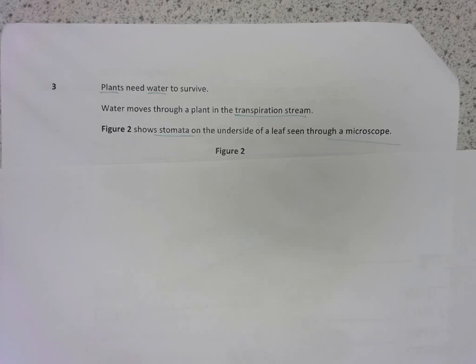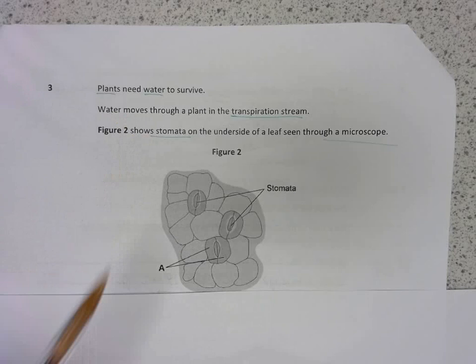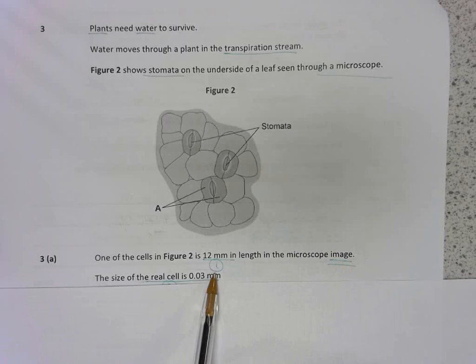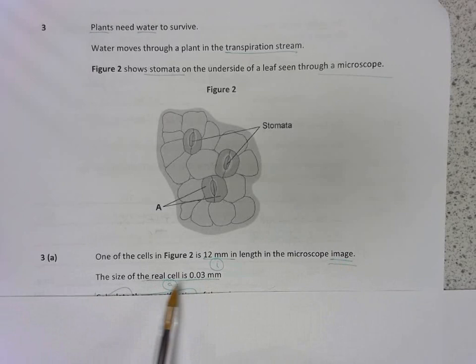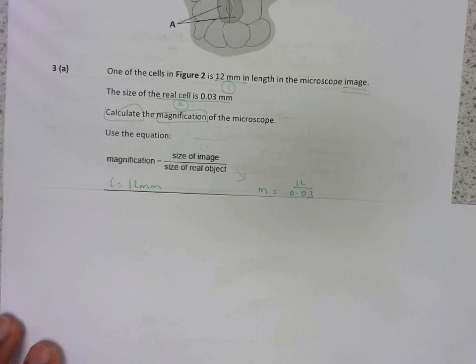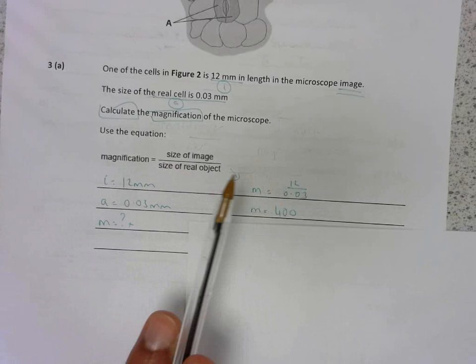Question 3. Plants need water to survive. Water moves through a plant in a transpiration stream. Figure 2 shows stomata on the underside of a leaf. So these are the stomata, the holes between the guard cells. We'll learn more about this in more detail later on. But the important thing here is about magnification. So one of the cells in figure 2 is 12mm in length in the microscope image. So I've immediately labelled that as I for image size. The size of the real cell is 0.03mm, so I've labelled that as A for actual size. Calculate the magnification of the microscope. So I'm using this equation, and I know I is 12, A is 0.03mm. Both of the units are the same, so I don't need to convert. And my magnification is what I'm trying to figure out. I've got the formula there, so I substitute and get my final answer times 400.